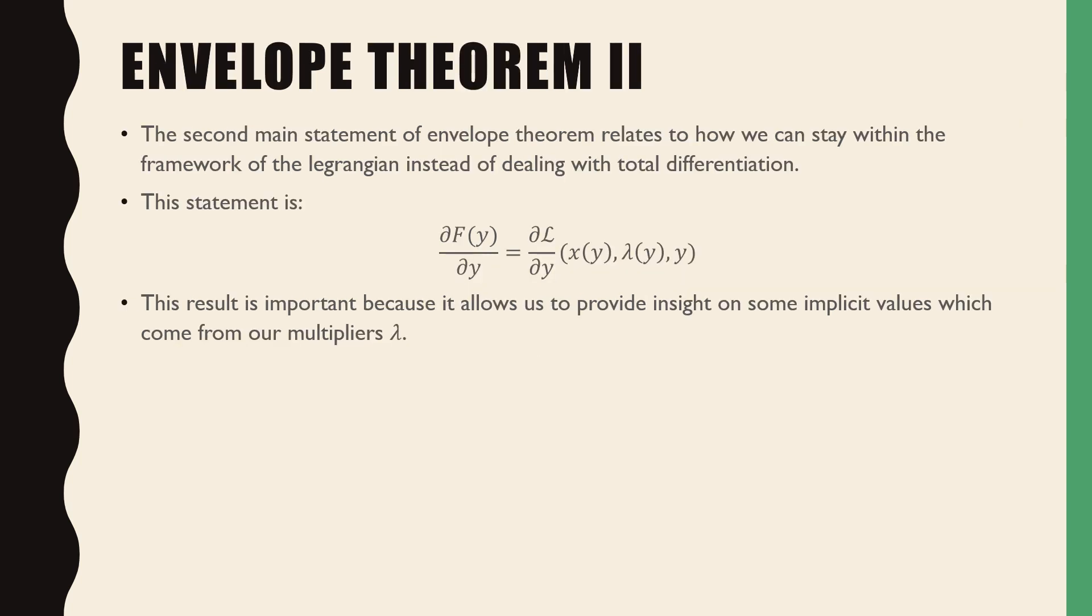So the second main statement of envelope theorem relates to how we can stay within the general framework of the Lagrangian instead of dealing with total differentiation. The statement is that ∂F(y)/∂y = ∂L/∂y, where L is the Lagrangian.